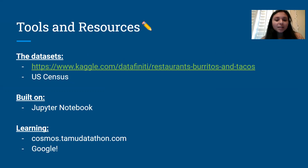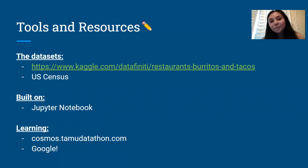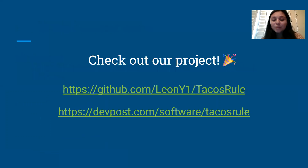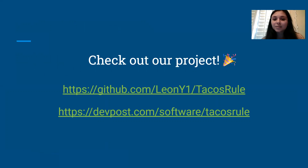As far as learning goes, the TAMU Datathon team made a learning module on Google Colab called Cosmos, which helped us learn the basics of data science concepts, and for pretty much everything else we just Googled. If you want to check out our project and code base, here's the GitHub and DevPost link. Now I'll hand it off to Leon to talk about how to expand your project.